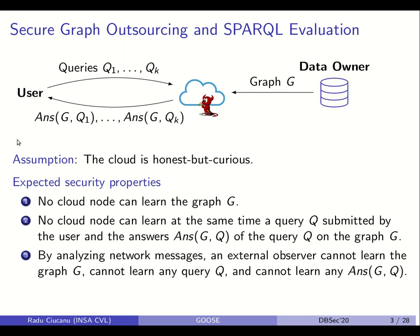In our context, we focus on the problem of evaluating SPARQL queries on an outsourced graph. We assume a data owner that outsources a graph to the cloud, and a user that submits queries — for example k queries — and the cloud will answer with k answer sets, one answer set for each of the user's queries.